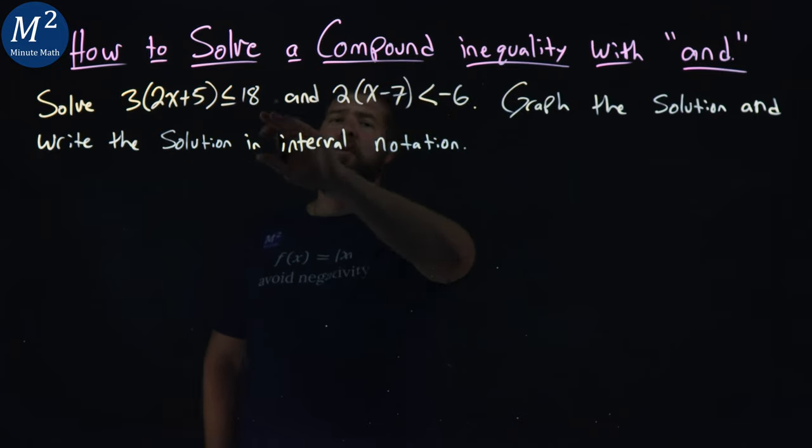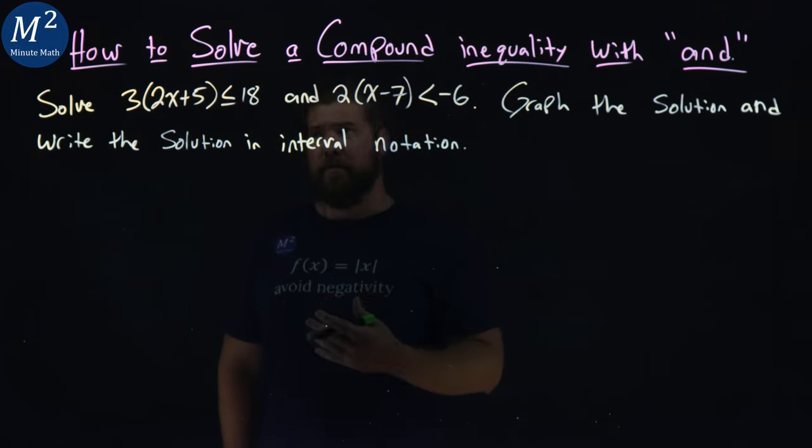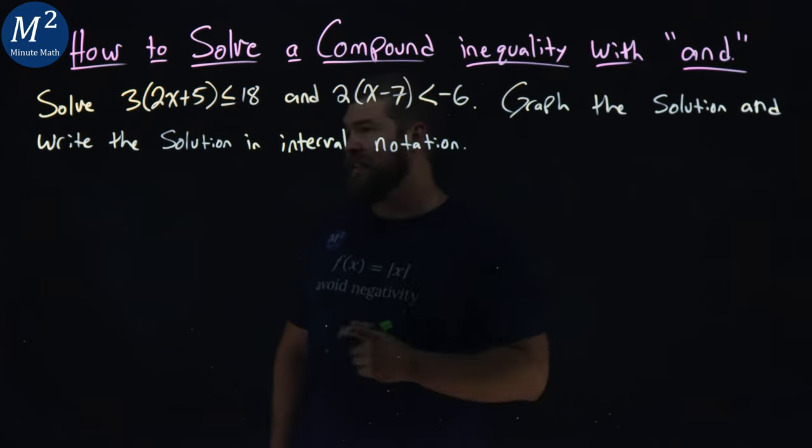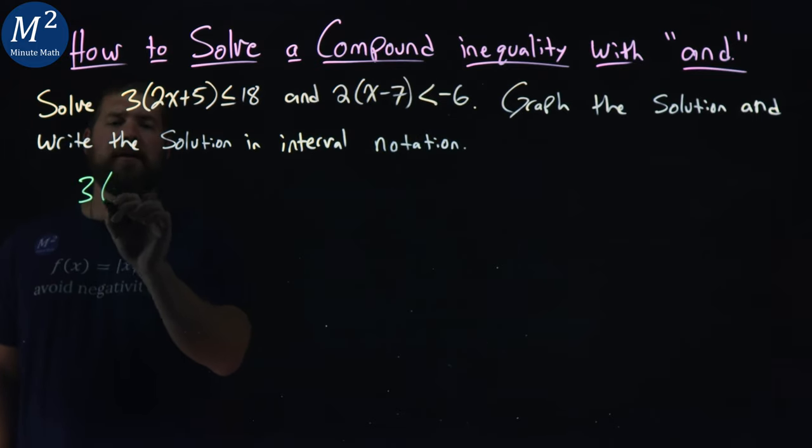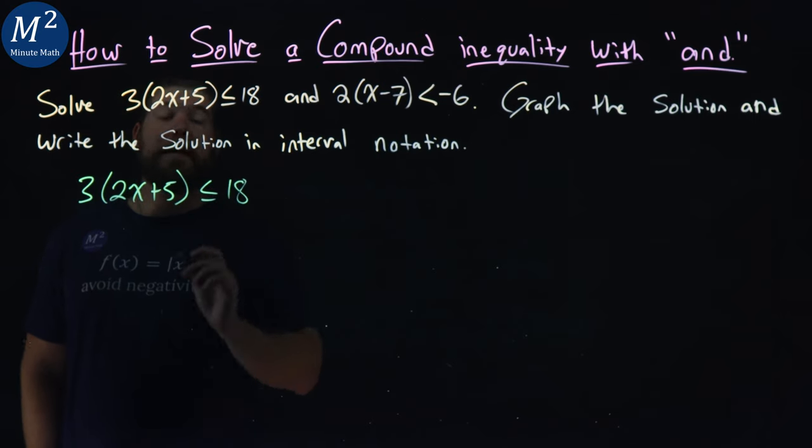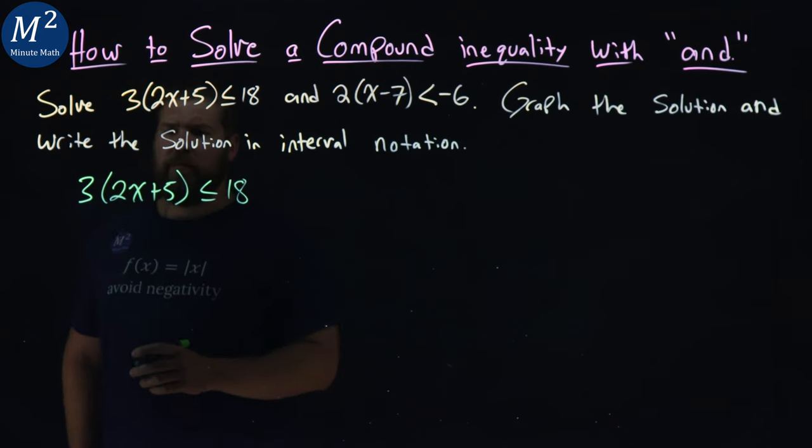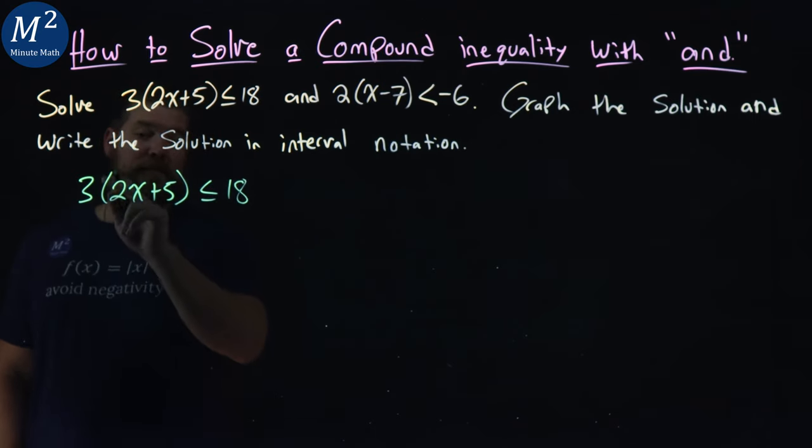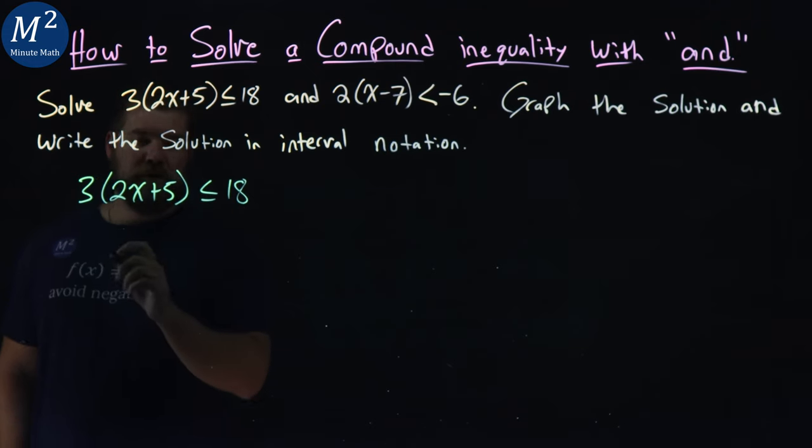So first thing here is I'm going to take each one of these inequalities and solve them. We're going to get x by itself. So we have 3(2x+5) is less than or equal to 18. I can either distribute the 3 to both parts here, or I can just divide both sides by 3, which I'm going to do first.